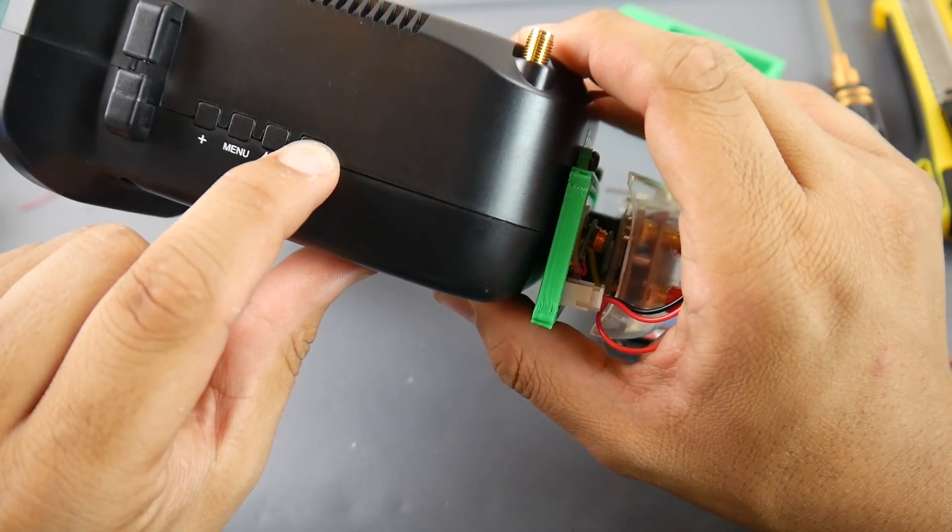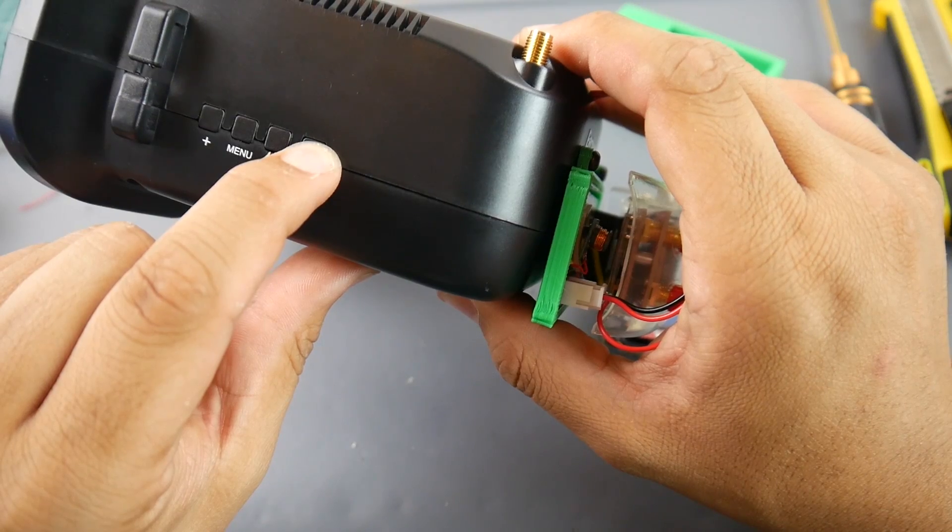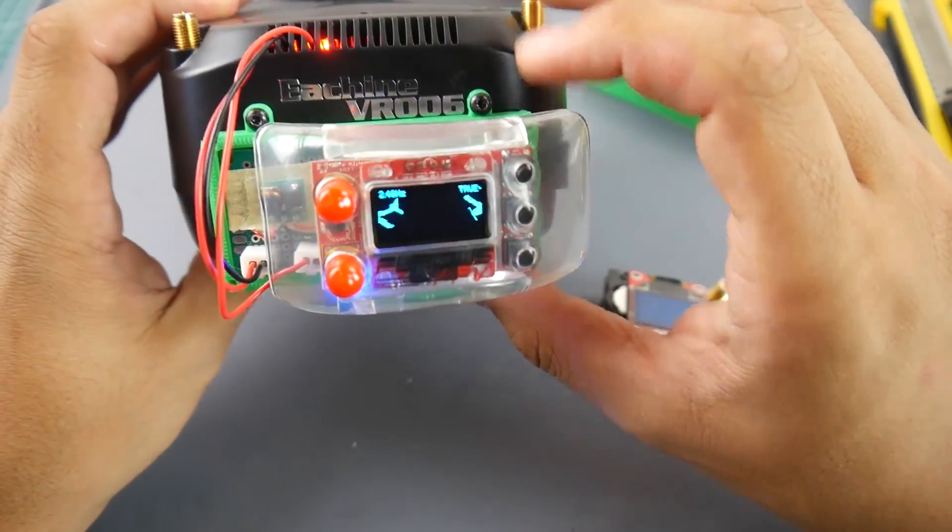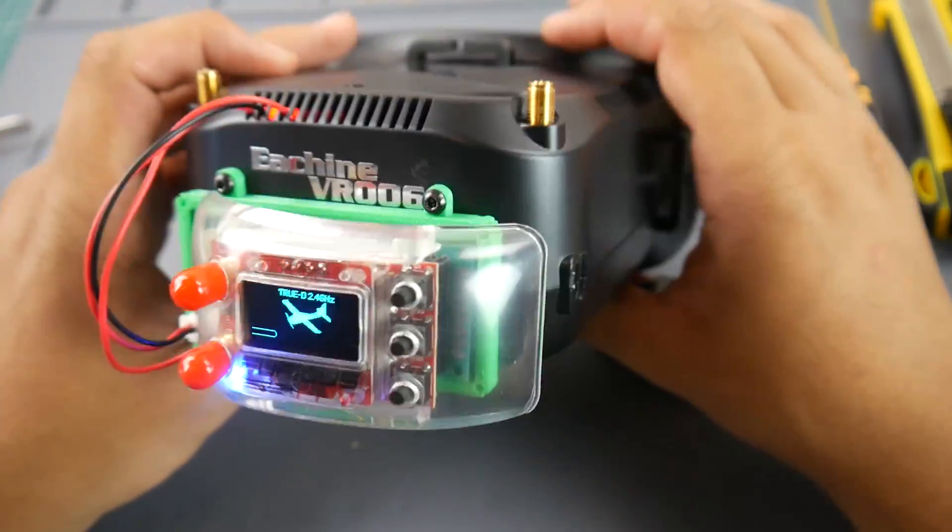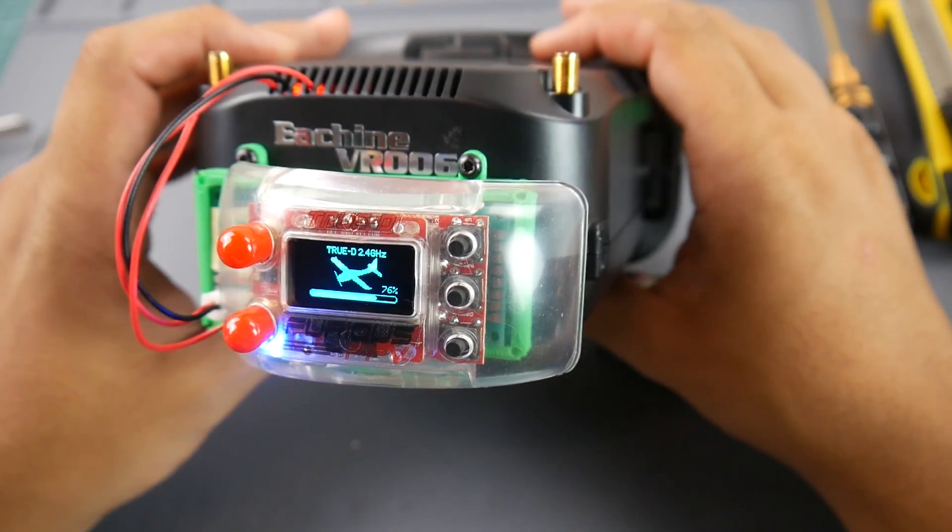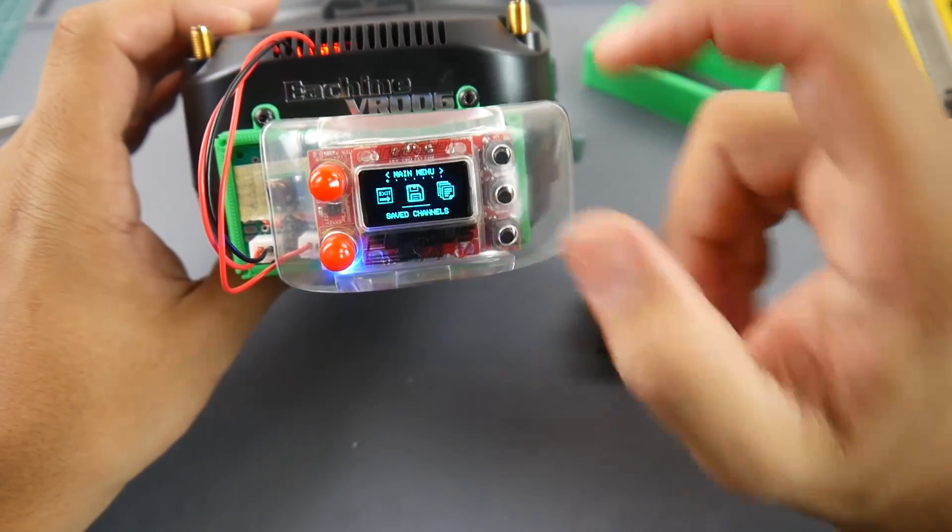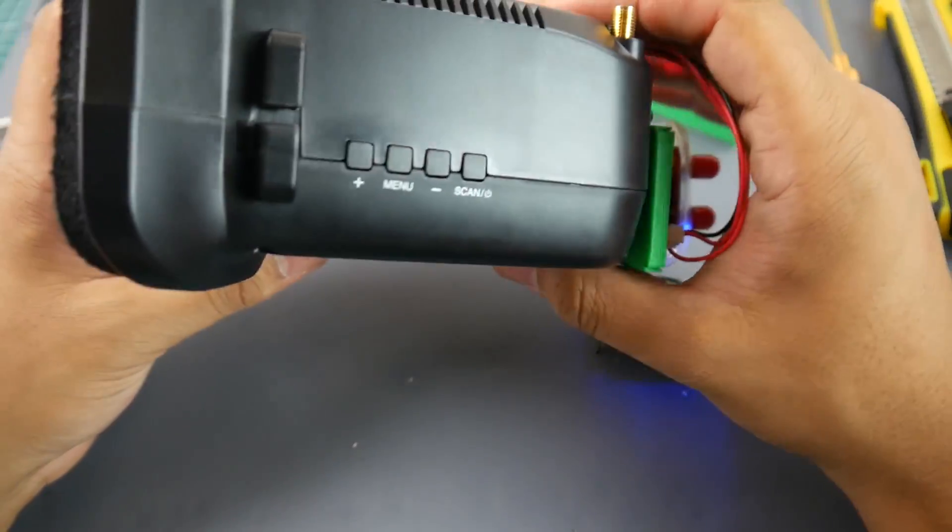Now if you want to see how awesome this little 2.4 gigahertz module is, it's pretty insane. So let's just check this out. So this is booting currently because the goggle is turning on. I'm going to go into the menu and we should see the menu on there once we choose the correct input here.